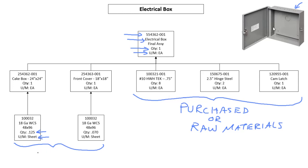I get down to a purchased part — I'm purchasing this sheet. That feeds into the part, and then this part feeds into the final assembly. That's how I get from purchased parts all the way up into my final assembly, which I can order.